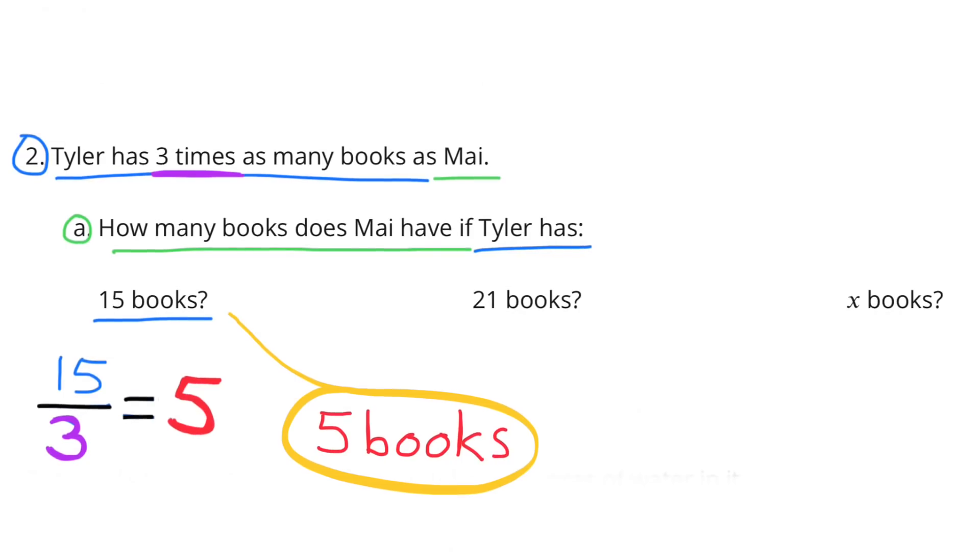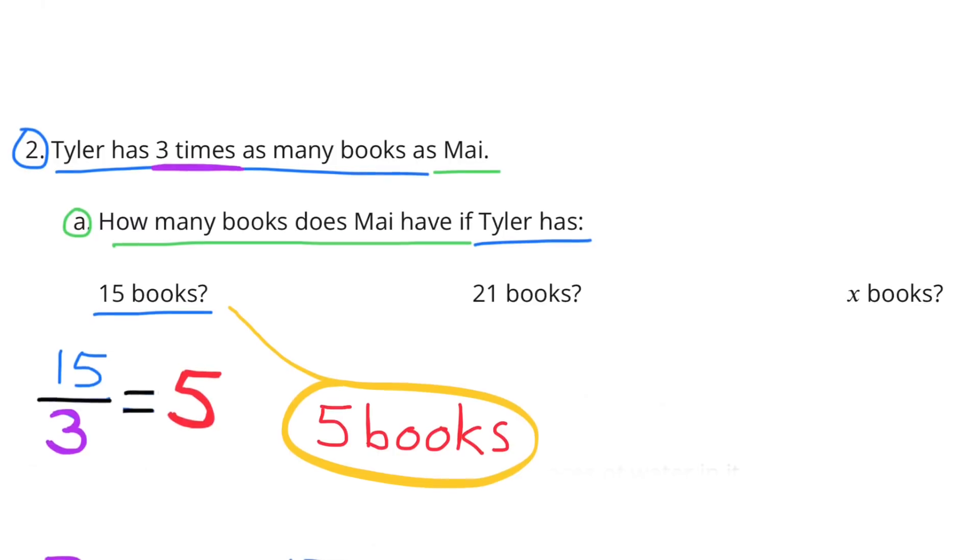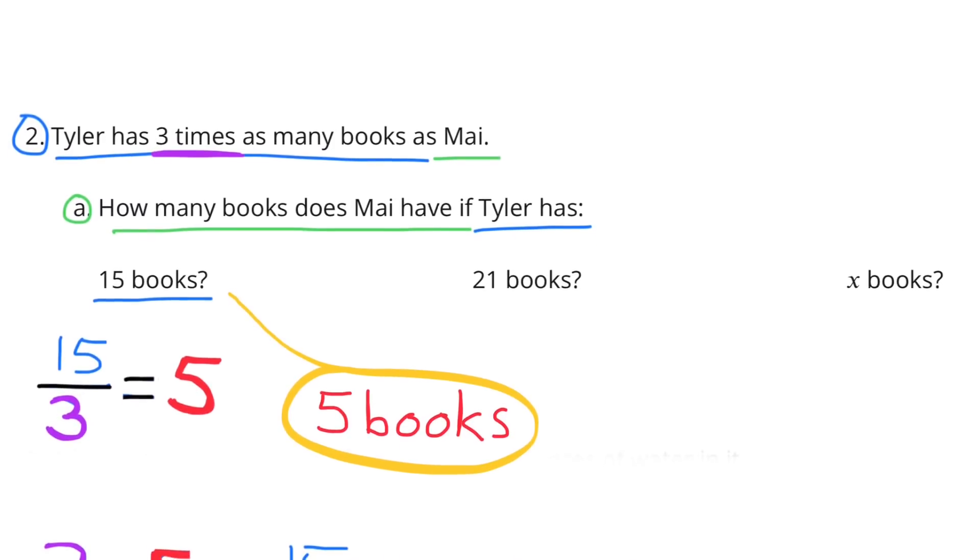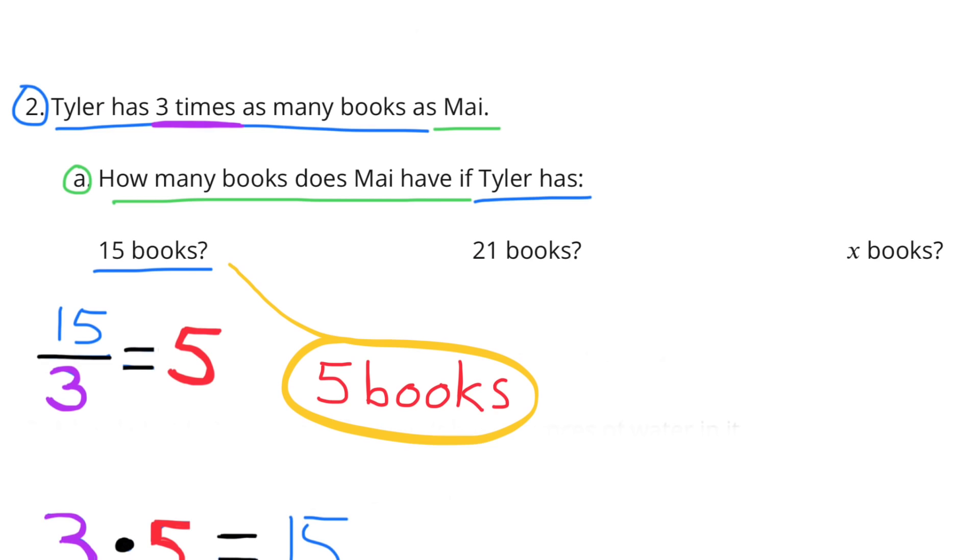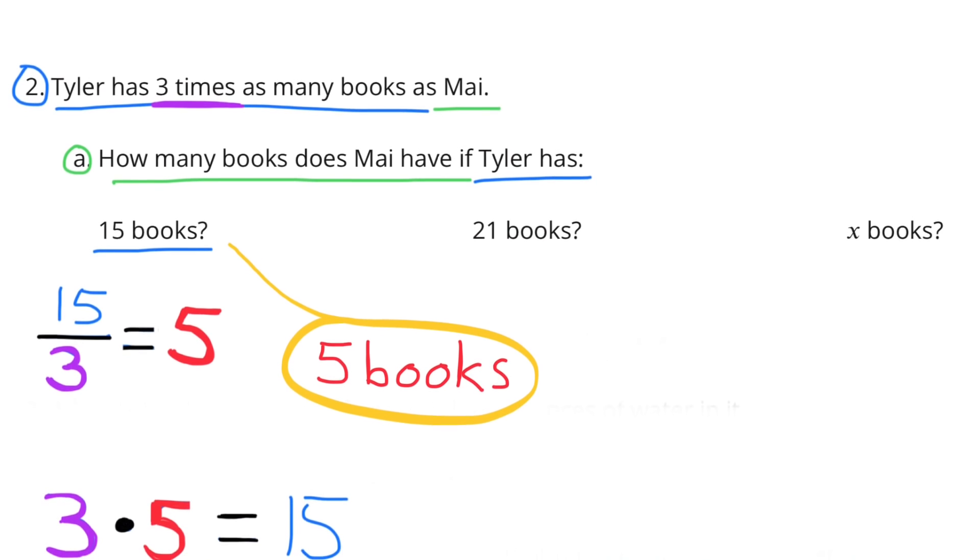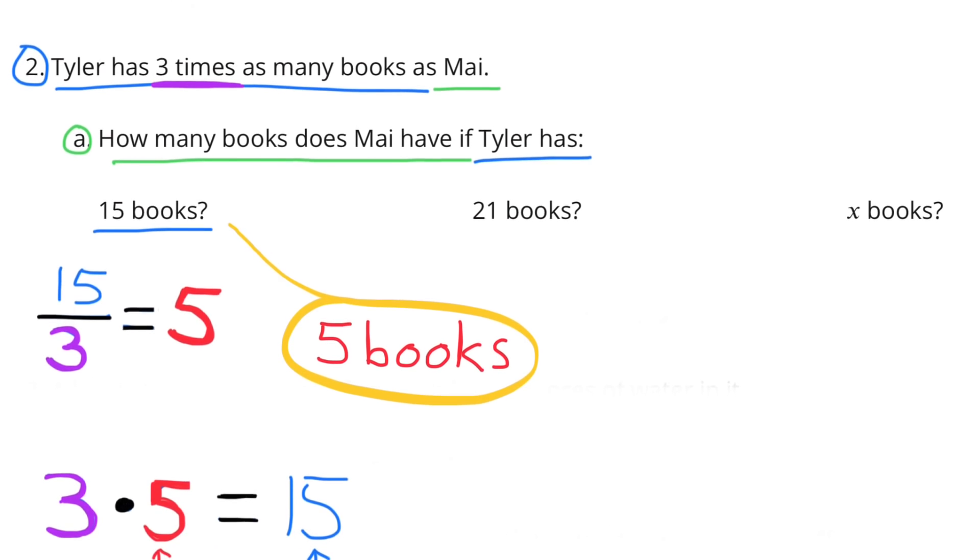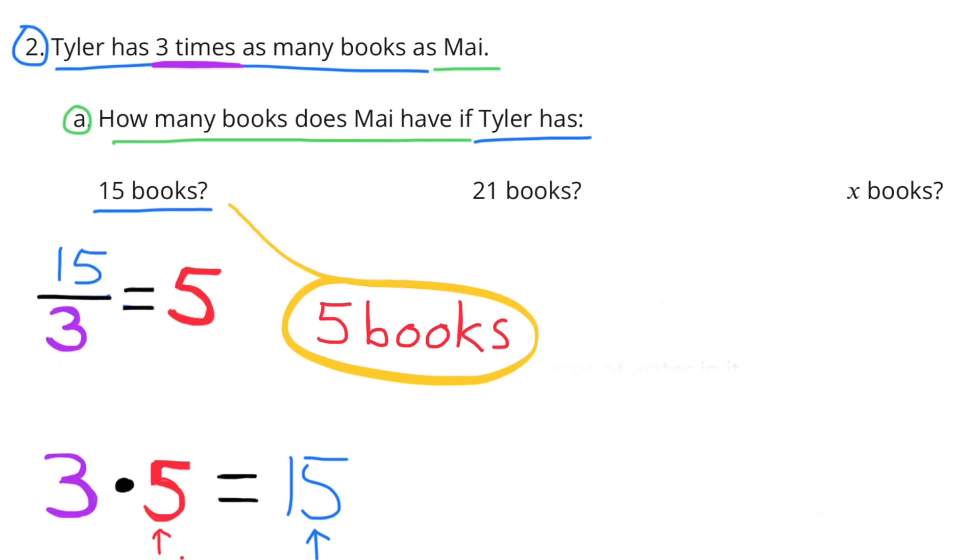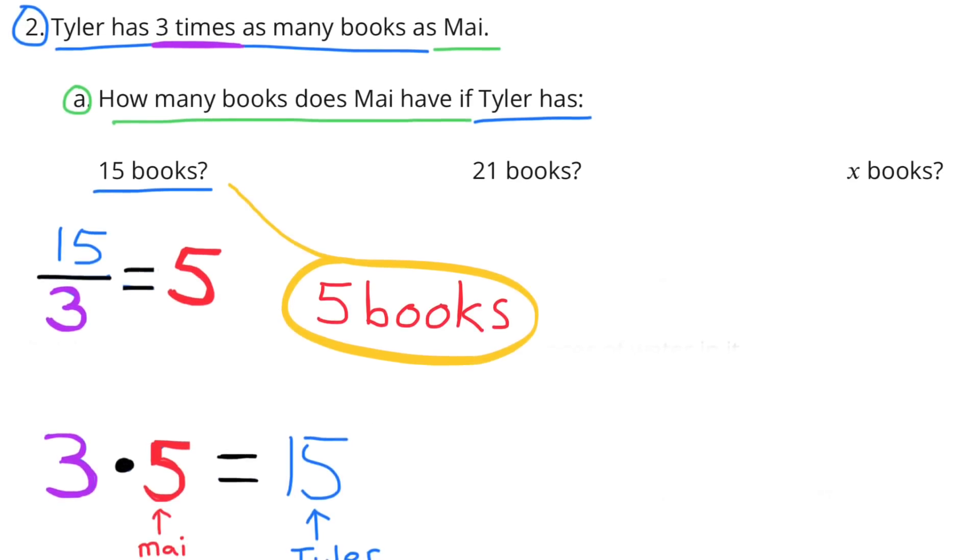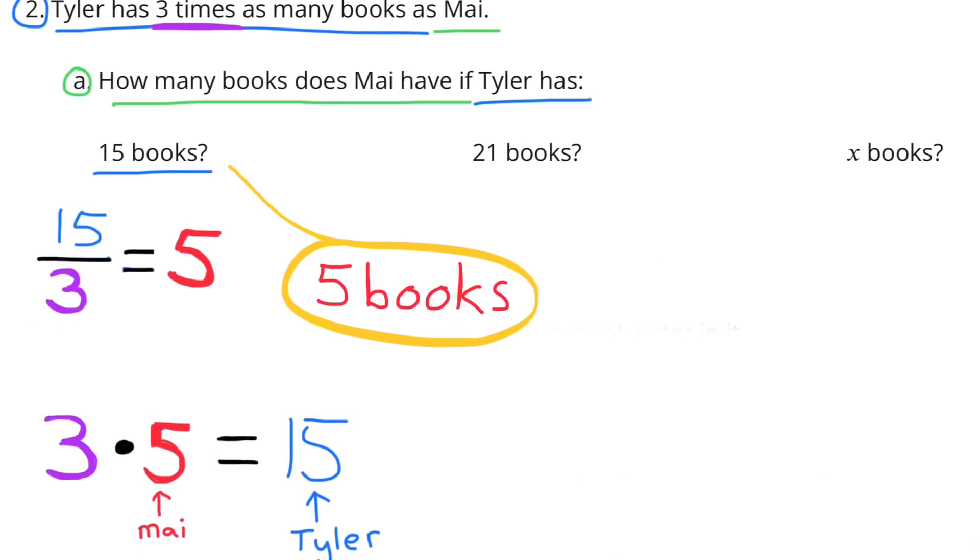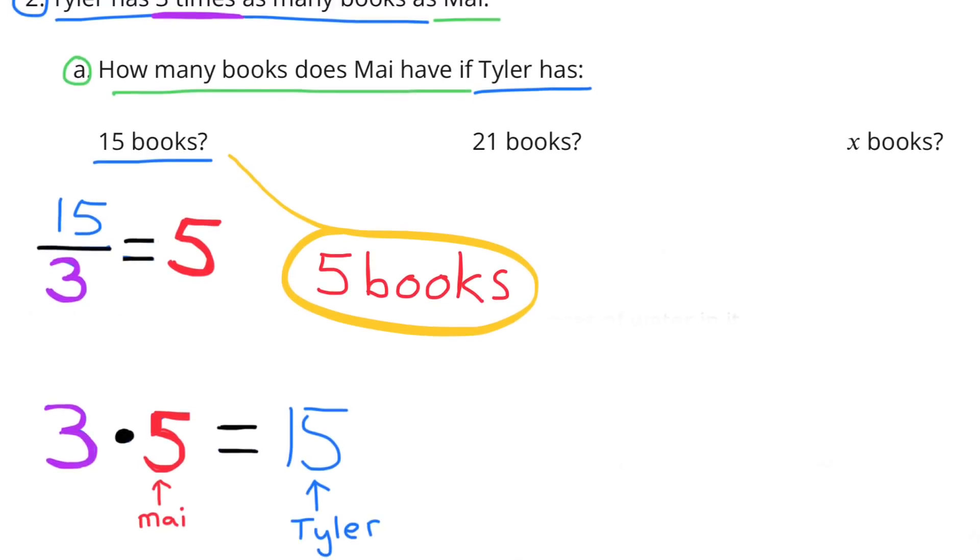Number 2. Tyler has 3 times as many books as Mai. A. How many books does Mai have if Tyler has 15 books? Tyler's 15 books divided by 3 times as many equals 5. So Mai would have 5 books if Tyler had 15 books.